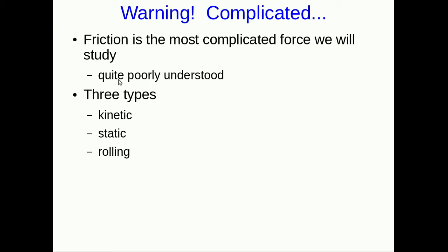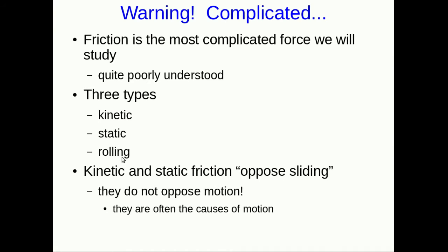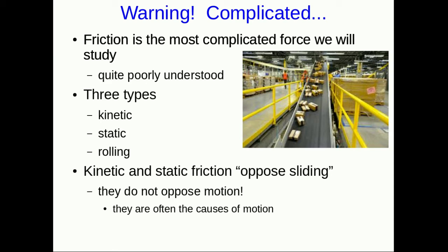Kinetic occurs when two things are sliding against each other, static when they are not sliding, and rolling, obviously, when things are rolling. Kinetic and static friction oppose sliding. They don't oppose motion, although you may have heard before that they do, but actually they can often be the causes of motion. Just think about this conveyor belt. If there was no friction, the boxes would be lying at the bottom of the conveyor belt, but the conveyor belt's sliding along underneath. It's the friction force that's pulling these boxes up the ramp.